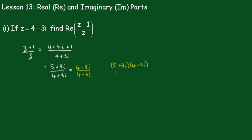Removing the brackets, we get 5 outside of 4 minus 3i plus 3i outside of 4 minus 3i, which gives you 20 minus 15i plus 12i.